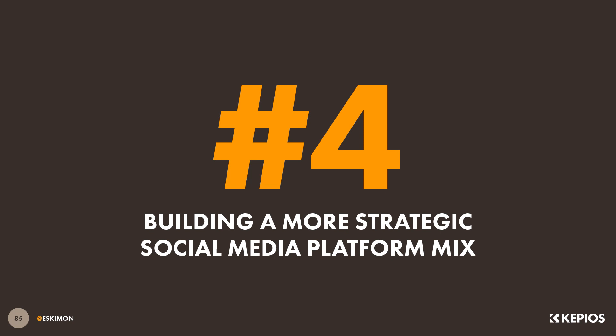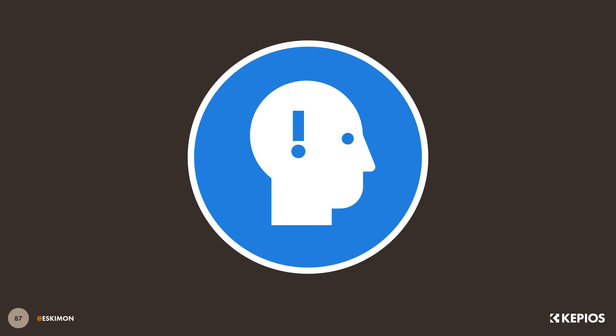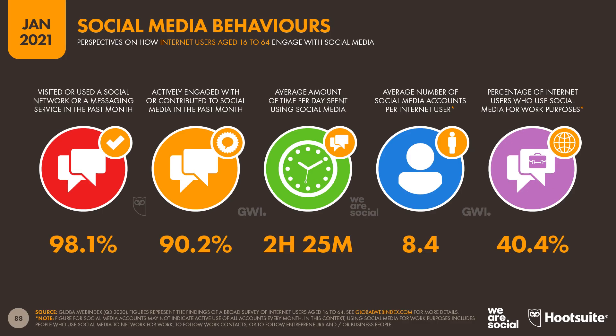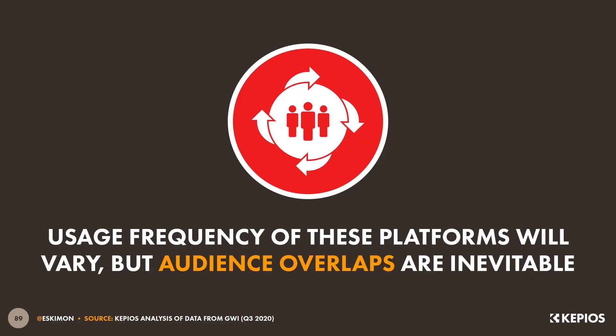The next section tackles one of the most common questions that I'm asked in Kepios' private briefings, and it addresses one of the most misunderstood aspects of social media marketing — how to build a more strategic social media platform mix. Here are the latest active user figures for some of the world's top social media platforms. With more than 2.7 billion monthly actives, Facebook still dominates when it comes to logged-in users, but my analysis suggests that YouTube would probably boast a bigger audience if we were to include non-logged-in visitors. At a global level, there are now at least six platforms with more than a billion monthly active users, while at least 17 have more than 300 million. But those numbers don't tell the whole story. Data from GWI shows that the typical internet user now has an account on more than eight different social platforms, and there's going to be a lot of overlap between different social platforms' respective audiences.